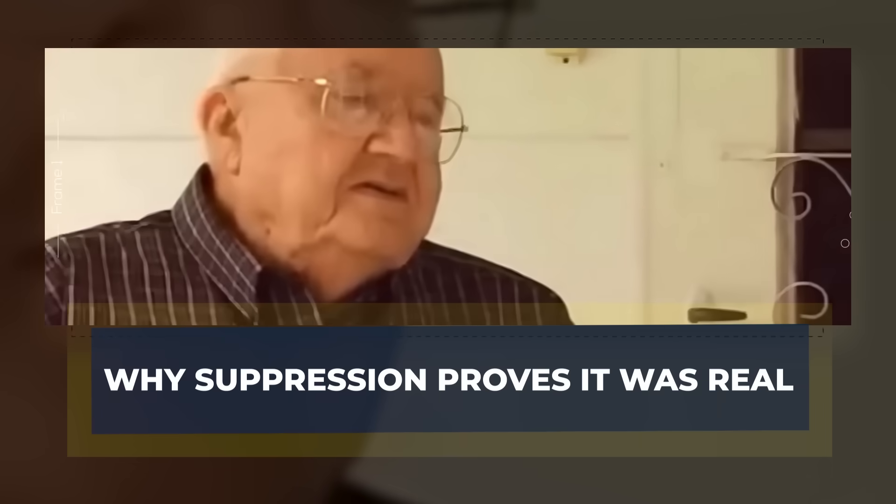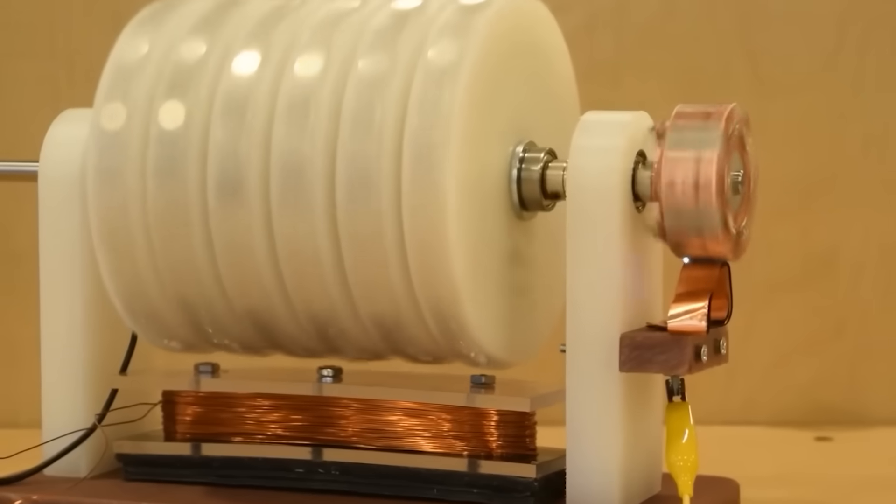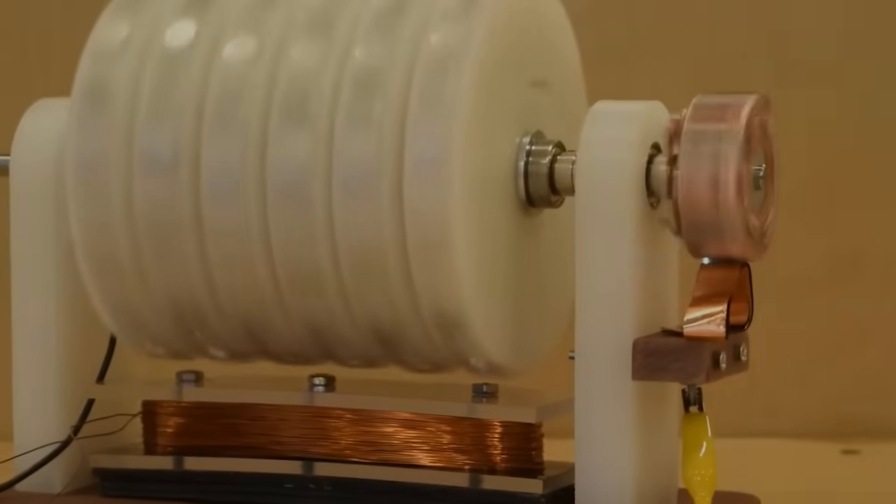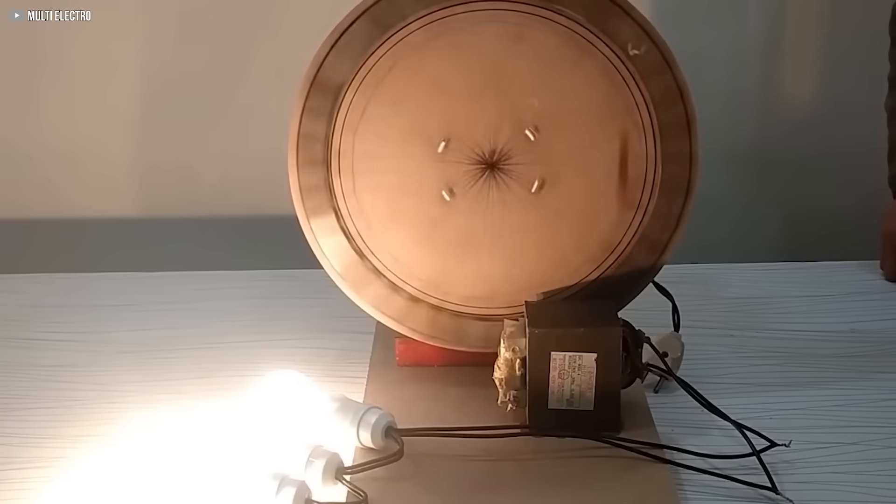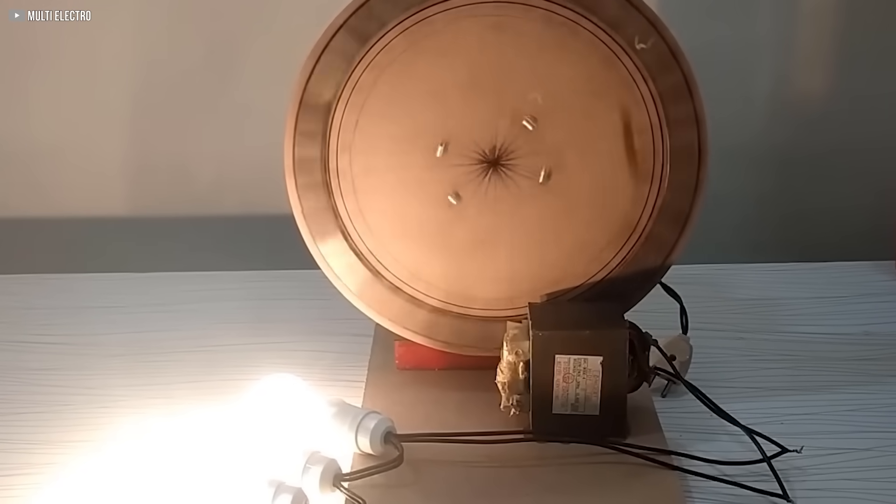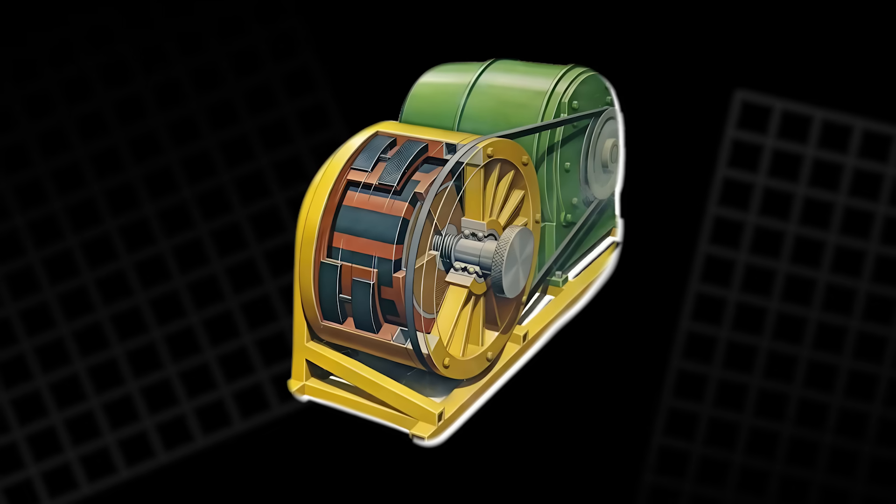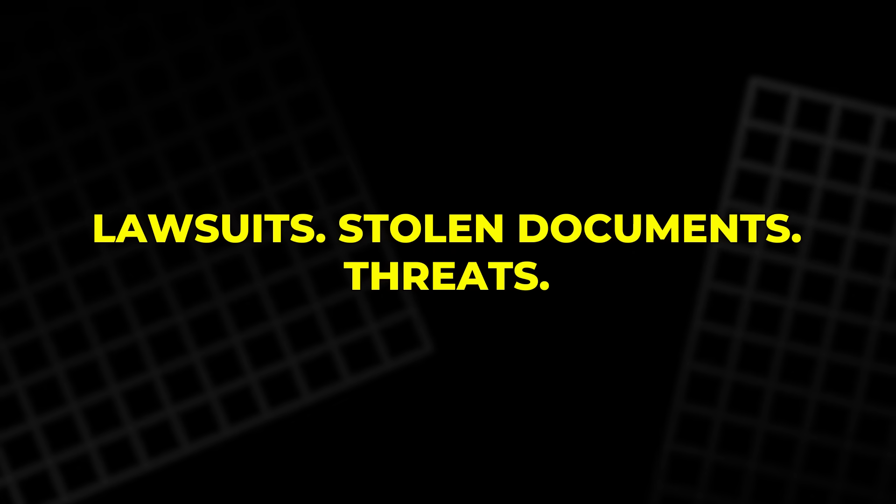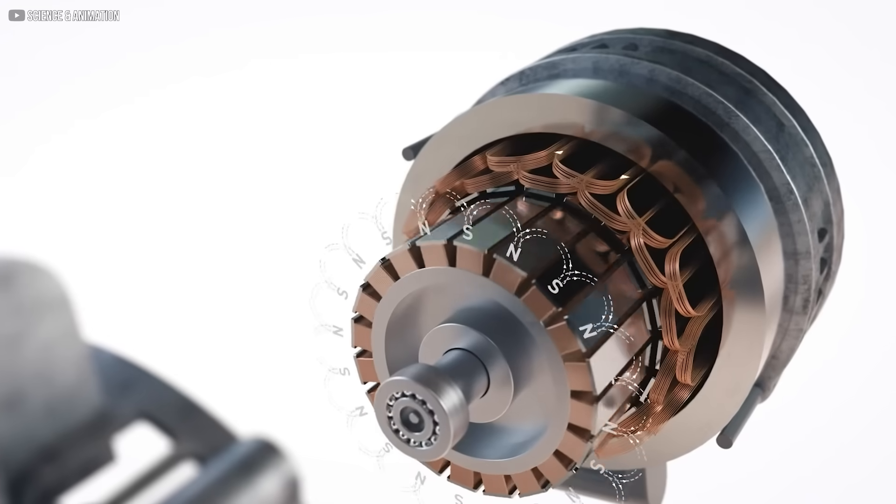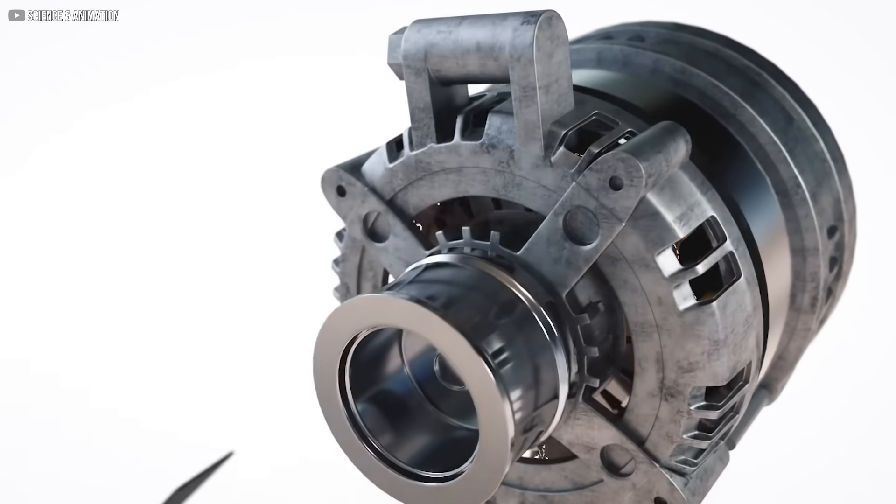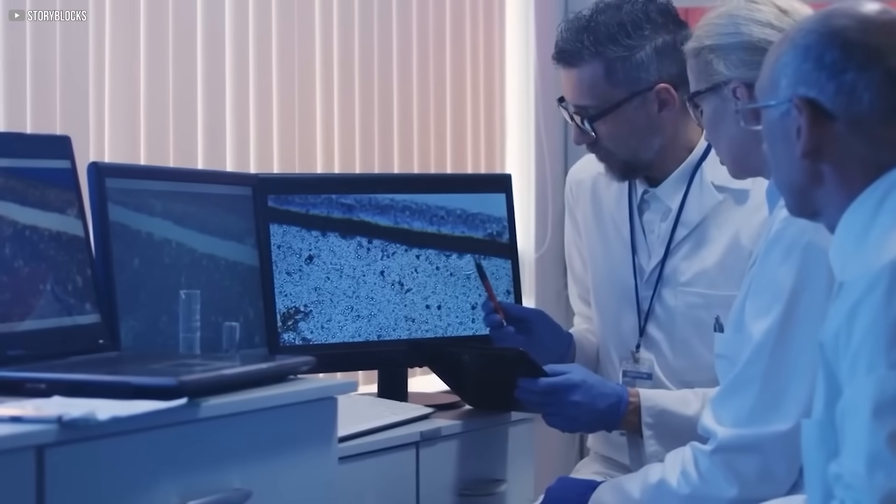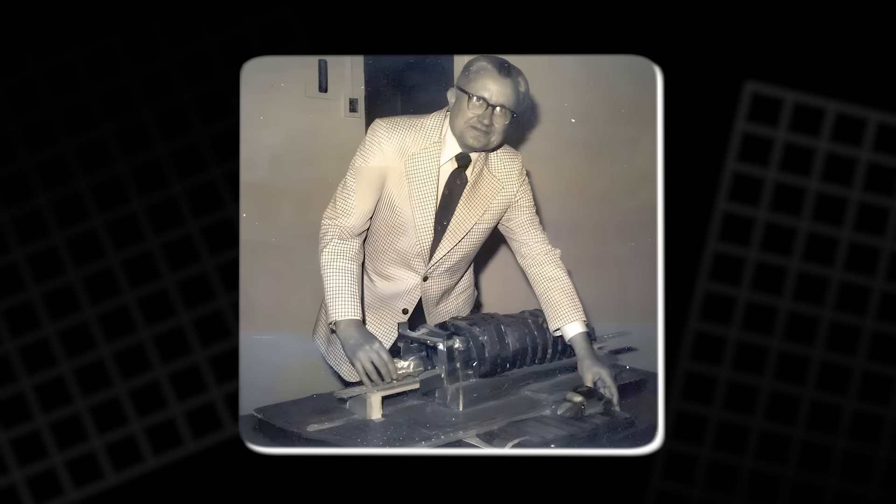Why Suppression Proves It Was Real. The greatest clue that Howard Johnson's invention worked lies in how hard it was buried. Think about it. Thousands of wild claims about perpetual motion have come and gone, most ignored, some laughed at. But Johnson's machine? It was treated like a threat. Lawsuits, stolen documents, threats, silence from institutions that are supposed to investigate new science. That level of suppression doesn't happen for nonsense. It happens when something is real.